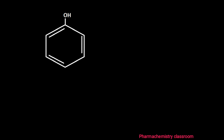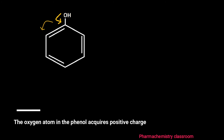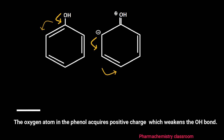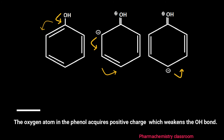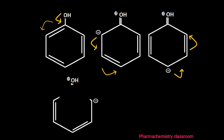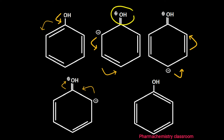Let us see the resonance structure of phenol. In the resonance structure of phenol, the oxygen atom acquires a positive charge, which weakens the OH bond. Thus it is easy for a base to abstract a proton, facilitating the formation of phenoxide. Due to this positive charge on oxygen, the OH bond breaks and it is very easy for the proton to leave the positively charged oxygen, which facilitates the formation of the phenoxide ion.